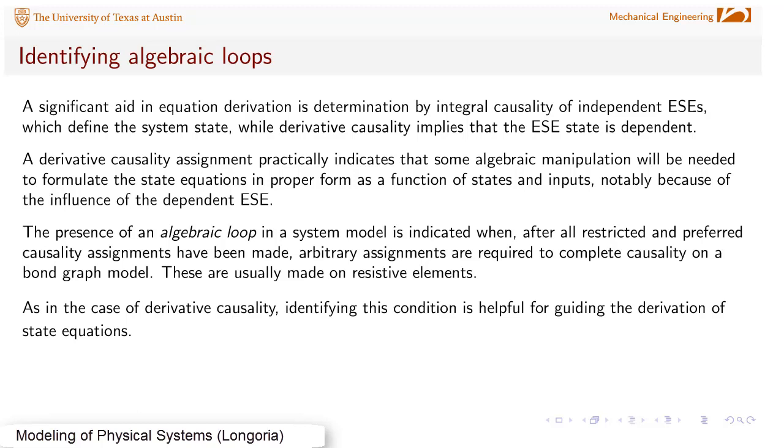Now I'm going to talk a little bit about the problem of algebraic loops in bond graph causality assignment. We've already seen that in deriving equations it's a significant aid to have identified independent energy storage elements using integral causality. This helps us define the system state vector.